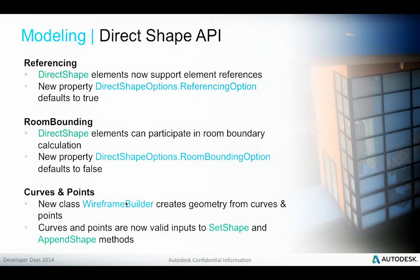Direct Shape elements now support element references, enabling alignment and dimensioning of these objects, and also enabling Direct Shape elements to host face-based family instances. There is a new DirectShapeOptions referencing option property to control this behavior. Direct Shape elements can participate in room boundary calculations with another property controlling that. The original Direct Shapes supported faces and thus 2D and 3D geometry; we can now also include 1D and 0D curves and points using the new WireFrameBuilder class.